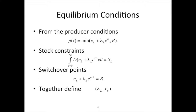In equilibrium, the price has to follow this path and the consumer price will be the minimum of whatever that fossil producer price is and the backstop. You have the stock constraint, so cumulative extraction at that price must equal the stock. We know at this switchover point the price of the fossil resource is just going to equal the cost of the backstop. That helps us pin down the shadow value and X_B, the switchover time.